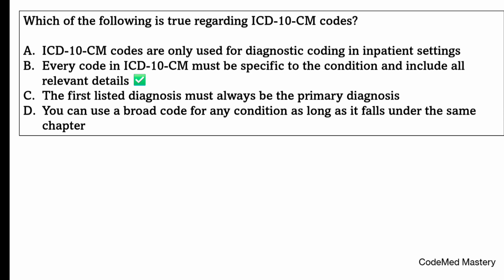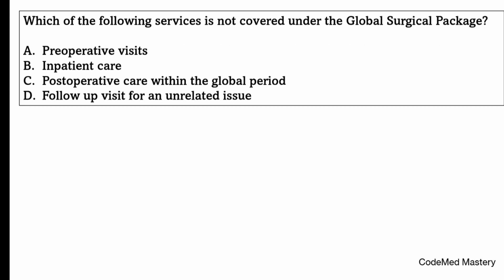Which of the following services is not covered under the global surgical package? Option A: pre-operative visits; option B: inpatient care; option C: post-operative care within the global period; option D: follow-up visit for an unrelated issue. The right answer is option D, because the global surgical package includes services such as pre-operative, intra-operative, and post-operative care, but routine follow-up visits that are unrelated to the surgical procedure are excluded.